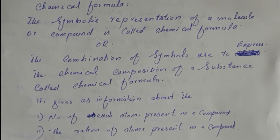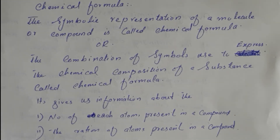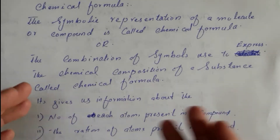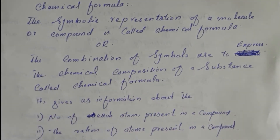When a compound or molecule is written in short form using symbols, it is called a chemical formula. This type of representation using the combination of symbols shows the chemical composition of the molecule.